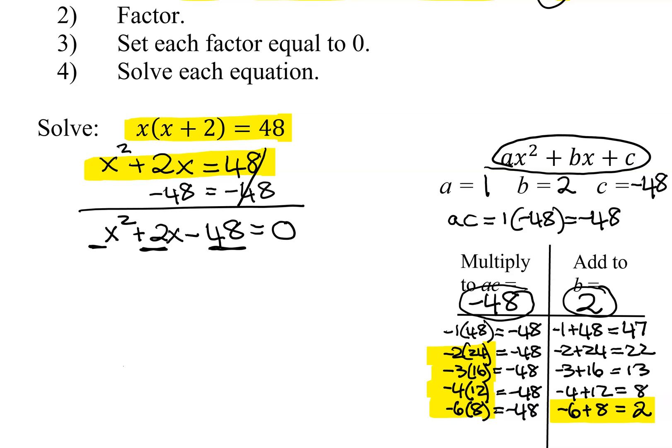So I'm ready to factor my trinomial now. And since the leading coefficient is 1, I don't have to write the middle term as two terms and factoring by grouping. Since a was 1, I know immediately that I'm going to have an x and an x, and my two factors are going to be x minus 6 and x plus 8 from these numbers over here. So I've factored it now.